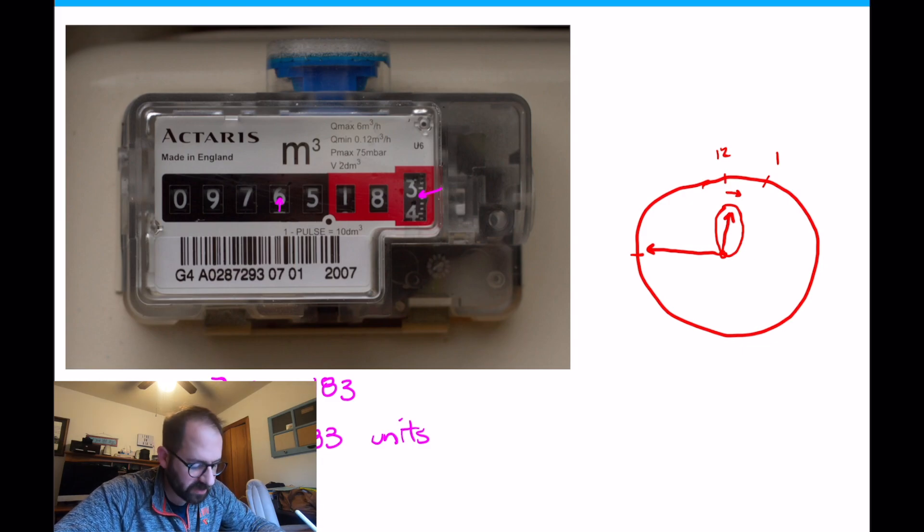This one happens to go decimals. It happens to go to the thousandths place on decimals, tenths, hundredths, thousandths. So yeah, that's kind of rare. Usually normal ones don't do that.